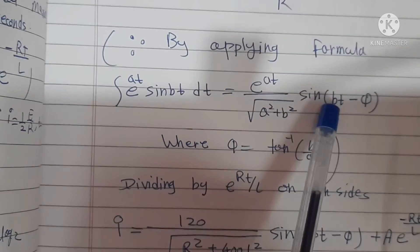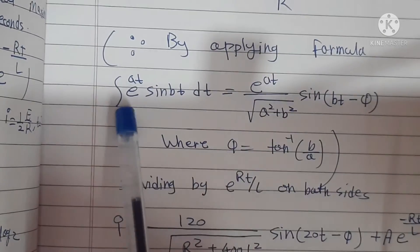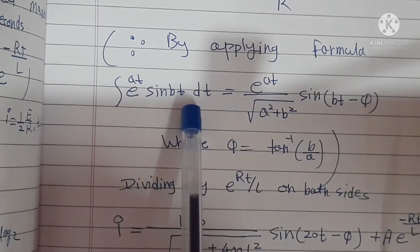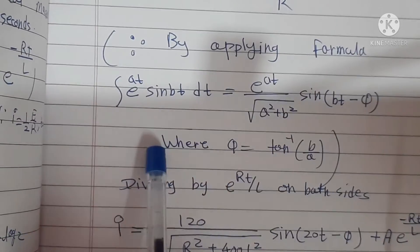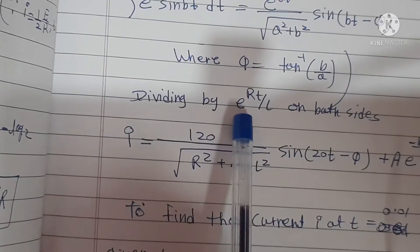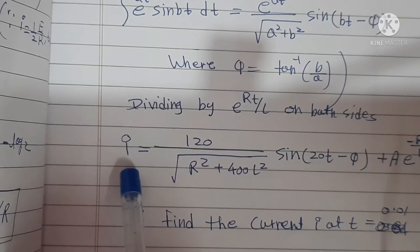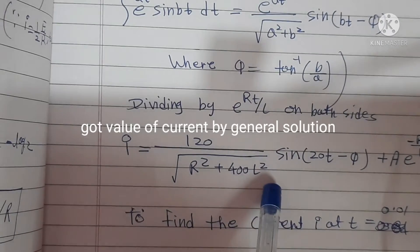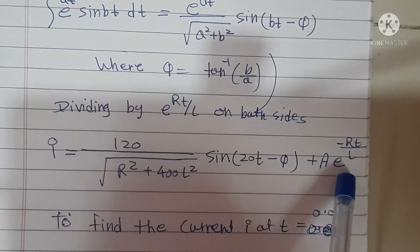Write this formula two to three times and practice solving problems with it once or twice so you learn how to use and remember it. After applying the formula, dividing both sides by e^(Rt/L) gives the current I alone: I equals 120/√(R²+400L²) · sin(20T − φ) plus A·e^(−Rt/L).